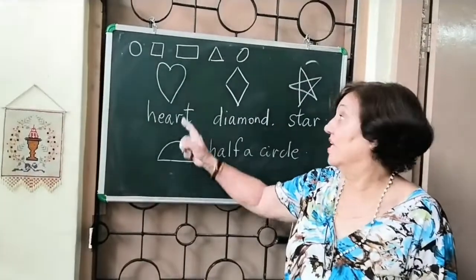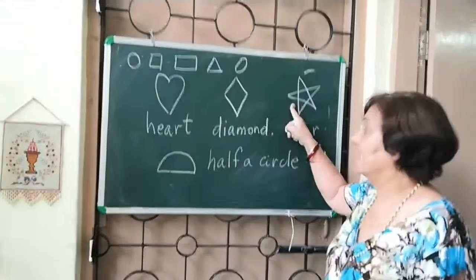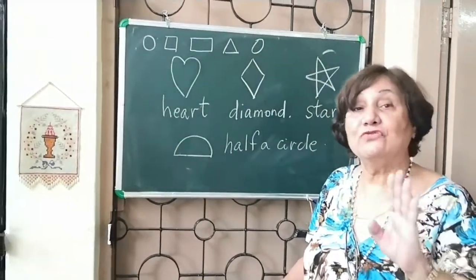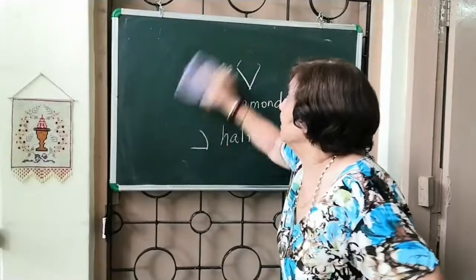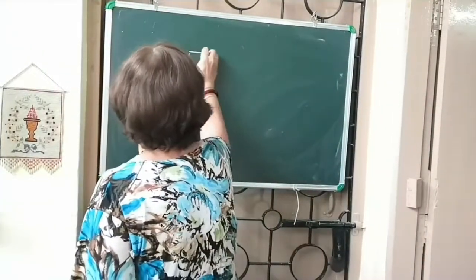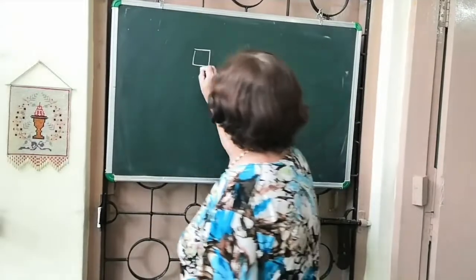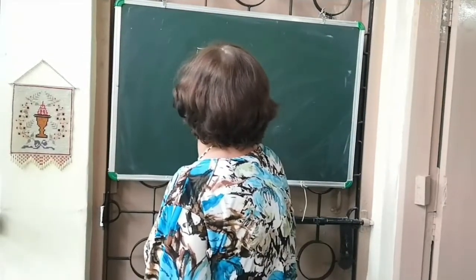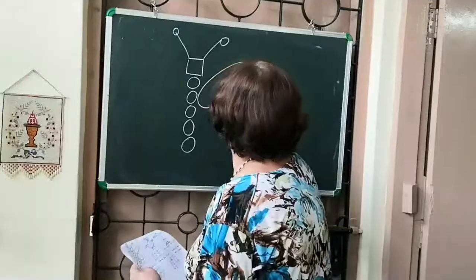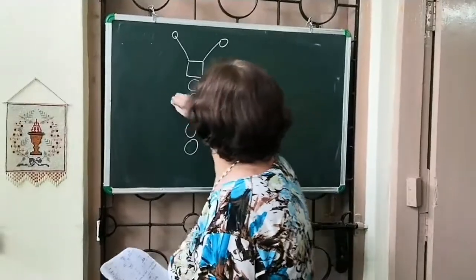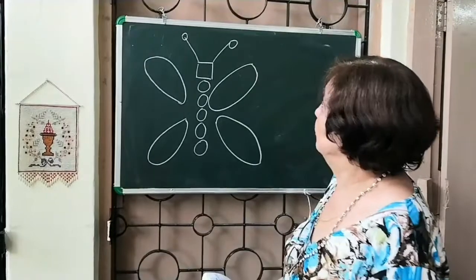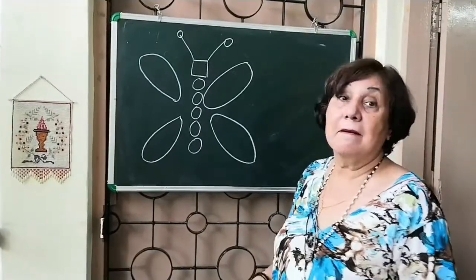I have taught you the heart, diamond, star and half a circle. So we have seen so many shapes. Now, I am going to draw something for you. All of you look at the blackboard and tell me what I have drawn. Now, all of you look at this. What does it look like? It looks like a butterfly.